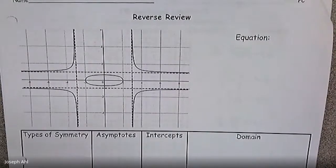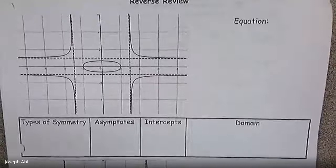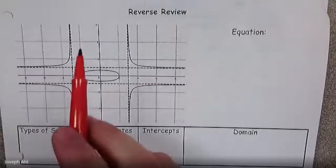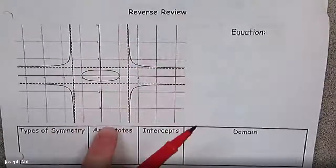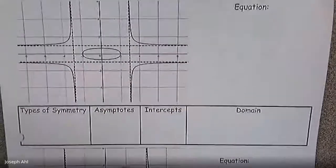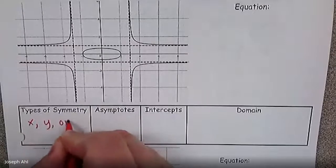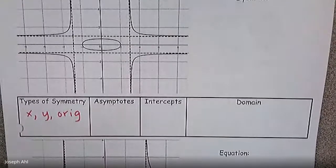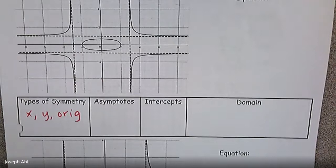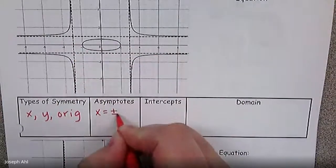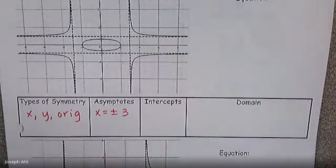Let's start filling in some of the information we know just by looking at the graph. Does it have any symmetry? It actually has a lot of symmetry. I see that it's symmetric about the y-axis, the x-axis, and it even looks like it's symmetric about the origin. So we have x, y, and origin symmetry. As far as asymptotes are concerned, we do have vertical asymptotes at x equals plus or minus 3.